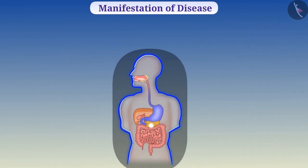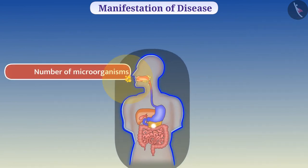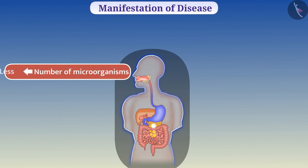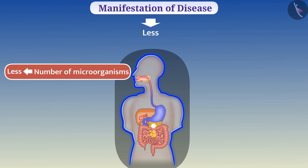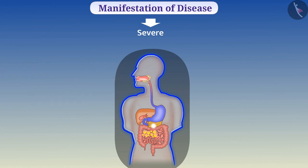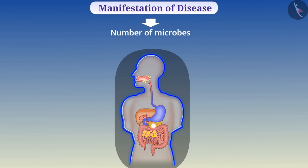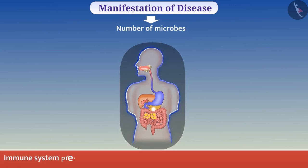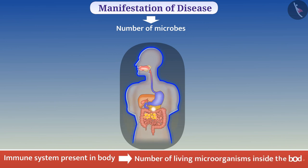We should keep in mind that when the number of microorganisms entering the body is less, the manifestation of disease will be less. If the number of microorganisms is large, then the disease can be severe and life-threatening. Therefore, the severity of disease manifestation depends on the number of microbes in the body, and the immune system determines the number of living microorganisms inside the body.